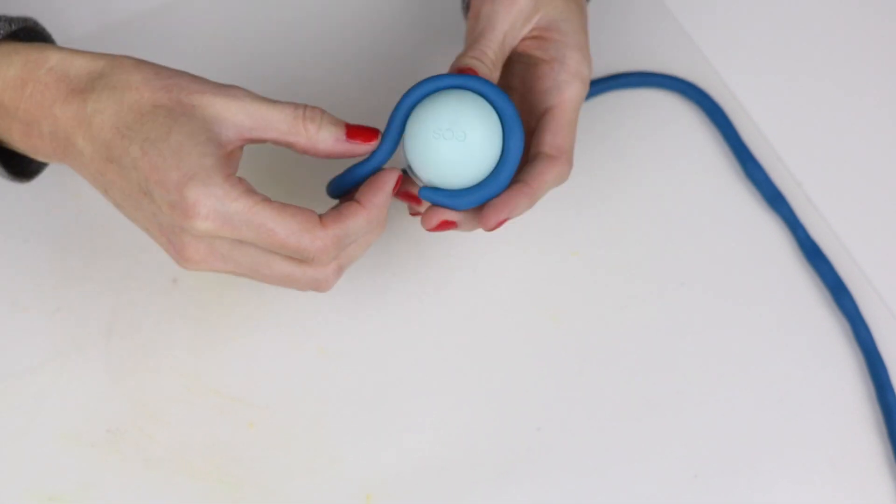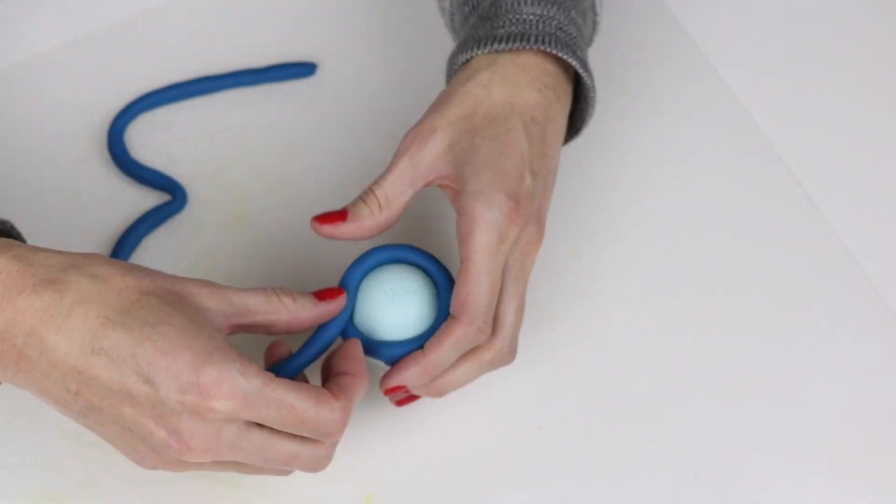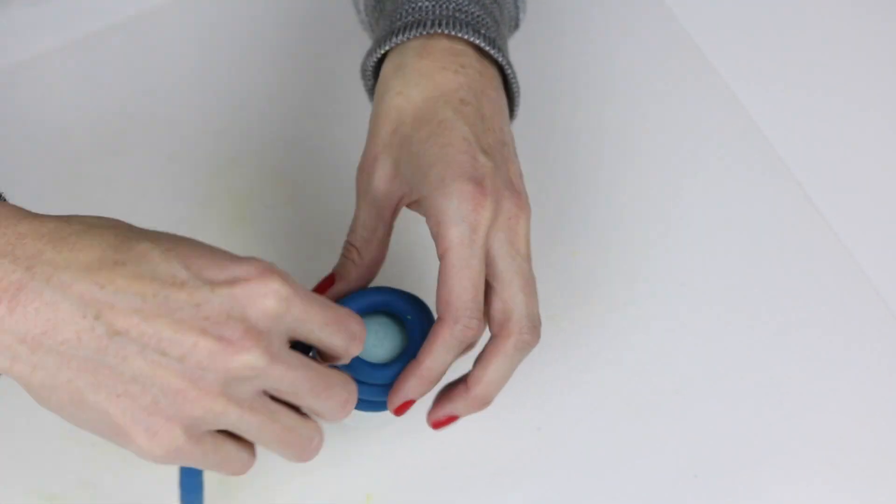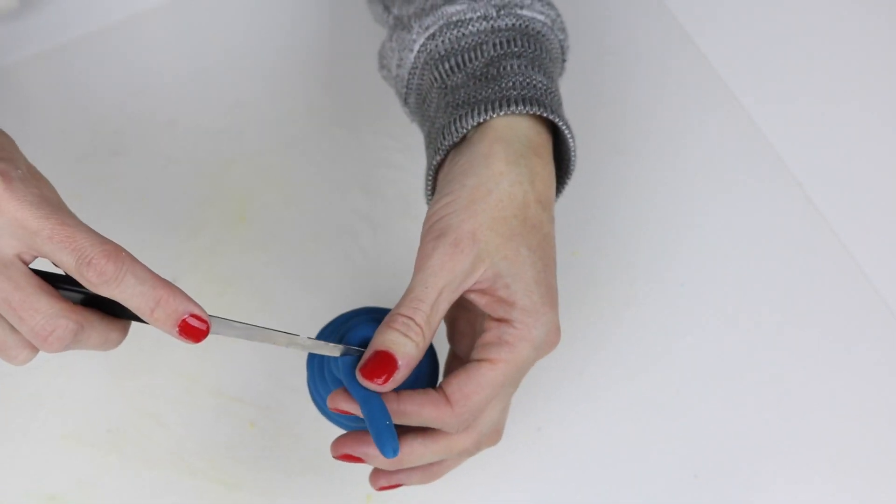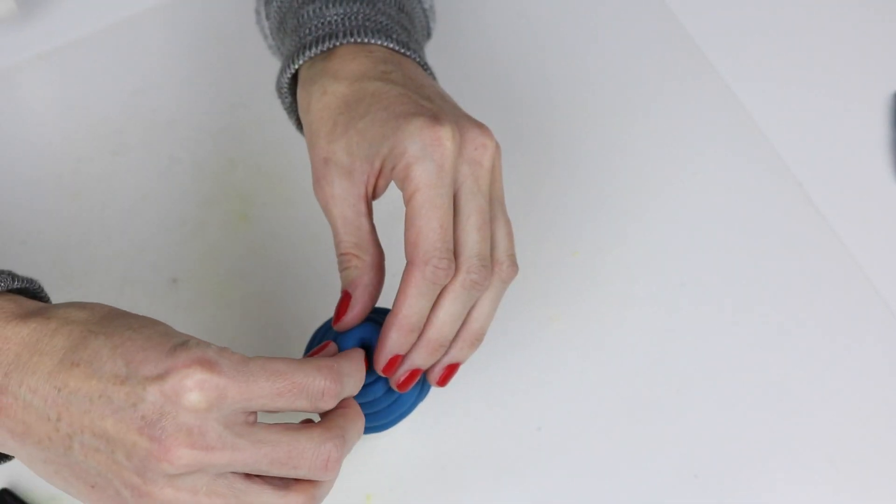When you get the clay wrapped all the way around you can just cut off any excess that you may have. Then you will want to set that aside and let it dry.